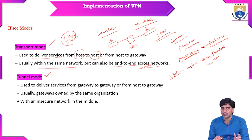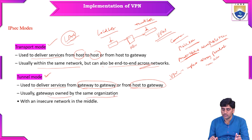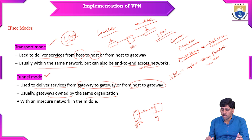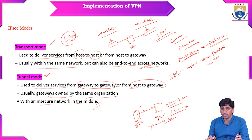The second mode is tunnel mode. Here, services are delivered from gateway to gateway or from host to gateway. Gateways are usually owned by the same organization — they can use routers, switches, or hubs as a gateway. Services are offered from gateway to gateway or gateway to host, meaning network to network or network to host. This mode is used when there is an insecure network in the middle, and VPN can be used at that moment.